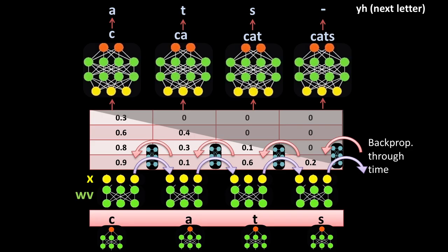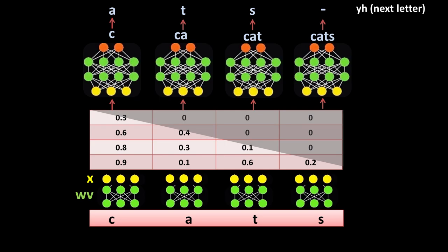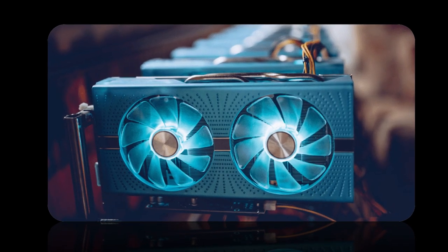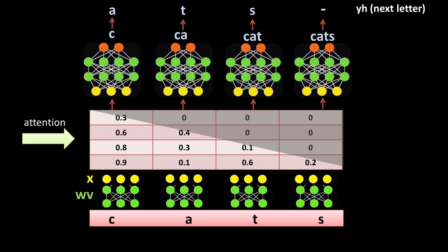One group paid more attention to the attention part — they removed all the recurrent parts and left only the attention part, and it worked. This was important because now we can train in parallel and take advantage of GPUs to scale these networks up to 100 billion parameters. Now let's implement the attention part, because that's all we need.